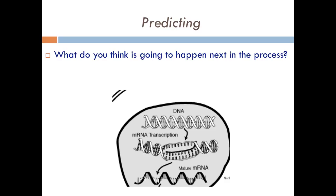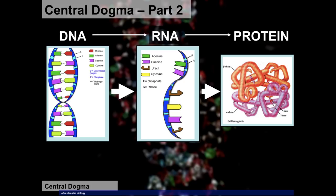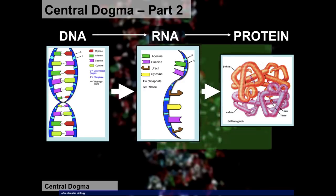We just did transcription and made a copy of our DNA information. The mRNA has been created and left the nucleus — it's now in the cytoplasm, the jelly-filled liquid that fills the rest of the cell. Moving on to part two of the central dogma theory: where that messenger RNA gets translated into protein.